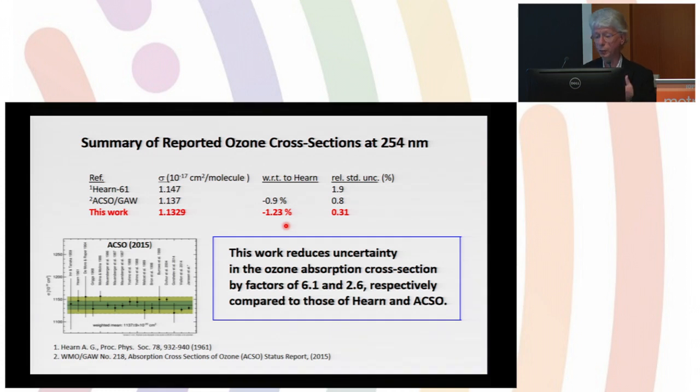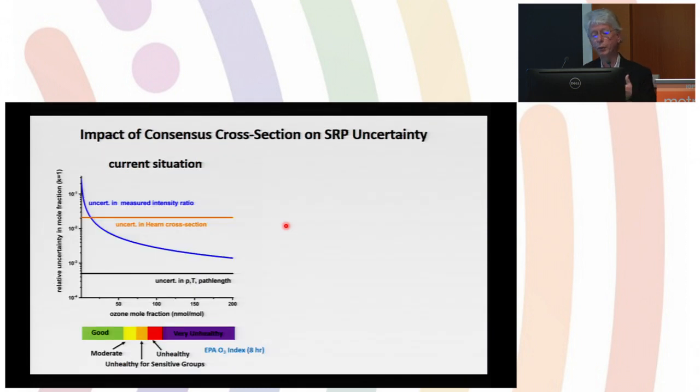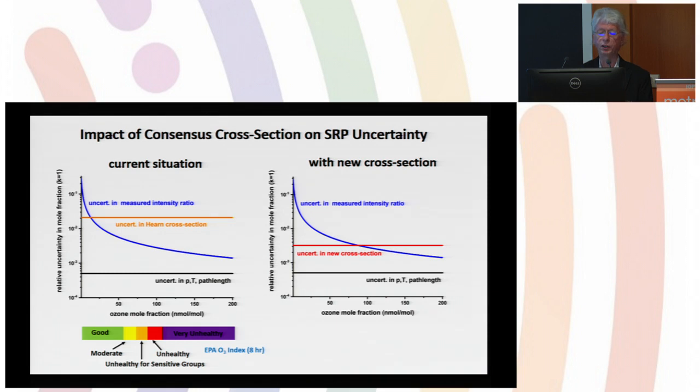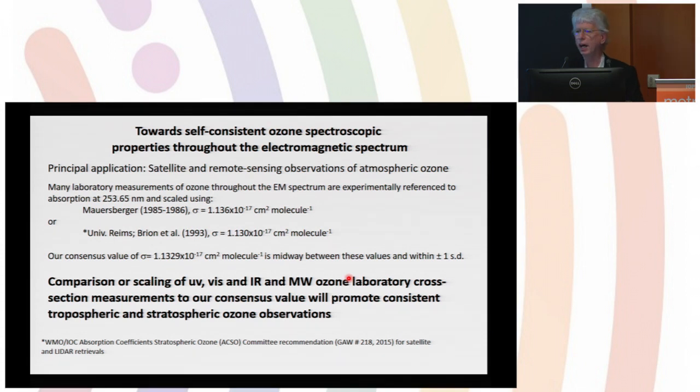In summary, we've reduced the uncertainty by about a factor of six relative to the standard value or the conventional values. That's pretty significant. Now we can look at the result—the before and after. Our uncertainty, going from the left which is the current state to the right, now has an uncertainty which does not limit the accuracy of the SRP measurement until you get to about 100 ppb, which is in the high end of the range typically observed in most situations. I think that's a big step forward.